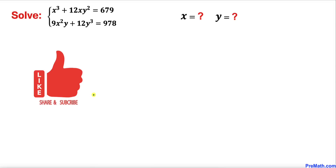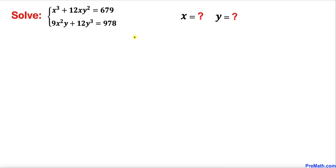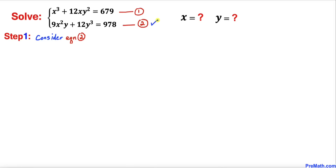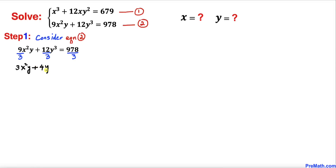Please don't forget to give a thumbs up and subscribe. Let's get started with the solution. We'll call the first equation number one and the second equation number two. Now let's focus on equation two — we can see that this equation is divisible by three across the board. So dividing across the board by three and reducing the fractions gives us 3x²y + 4y³ = 326.